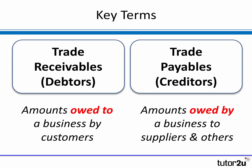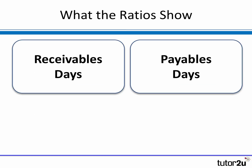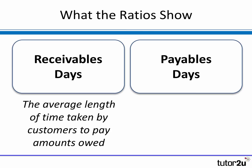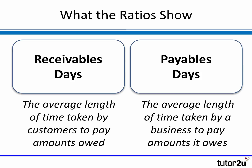Trade payables are the amounts that are owed by a business to other businesses and individuals — typically suppliers who've allowed the business to buy goods and services on credit. Trade payables are typically shown as current liabilities in the balance sheet. The two ratios show: on one hand, receivables days — how long on average it takes customers to pay the amounts they owe; and on the payables side — how long on average the business takes to pay the amounts it owes its suppliers.